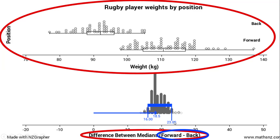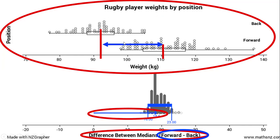What they've done specifically to get this confidence interval is they've done the median weight of the forwards take away the median weight of the backs. So we've taken that median weight of the forwards, subtracted the median weight of the backs, and that difference — the blue arrow that I've drawn there — is the same blue arrow on their graph showing the 18.5 kg. That 18.5 kg is the difference between the two medians.